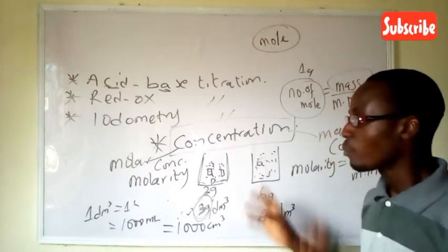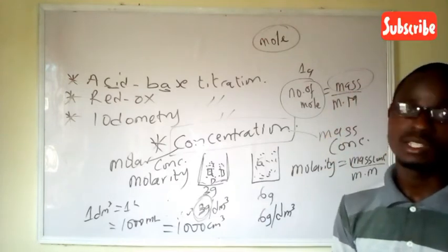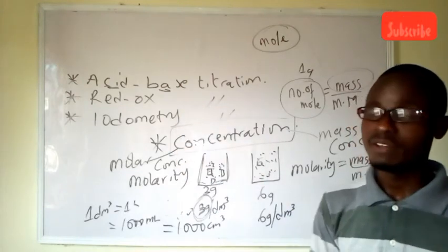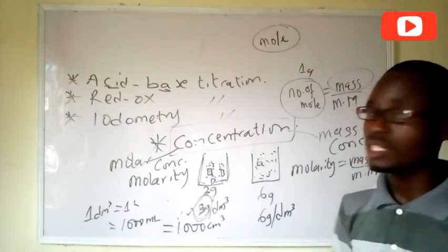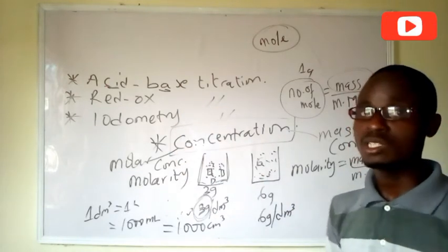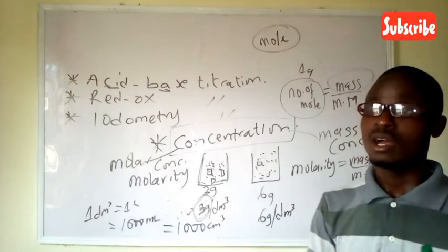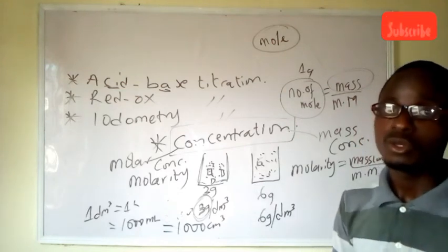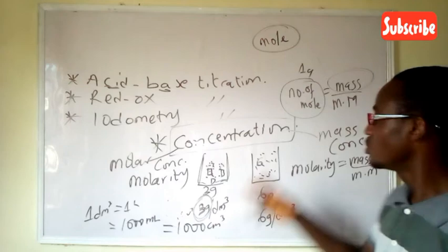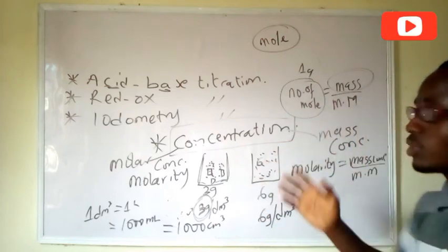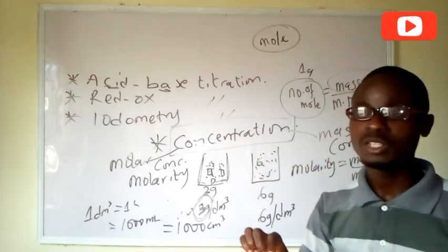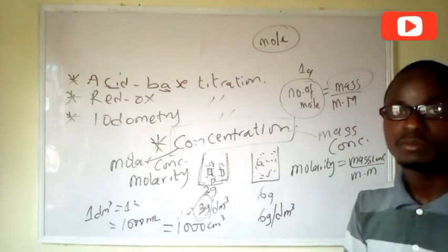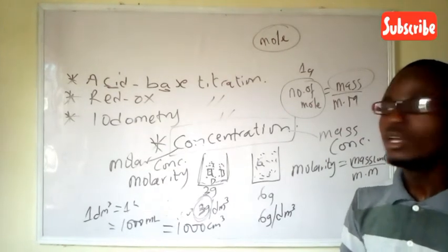This applies for solid substances like sodium hydroxide, which is a base. We also have some reducing agents and oxidizing agents that are always in their granulated, powdered, or solid form. We can use this method to actually prepare a certain concentration of our choice.